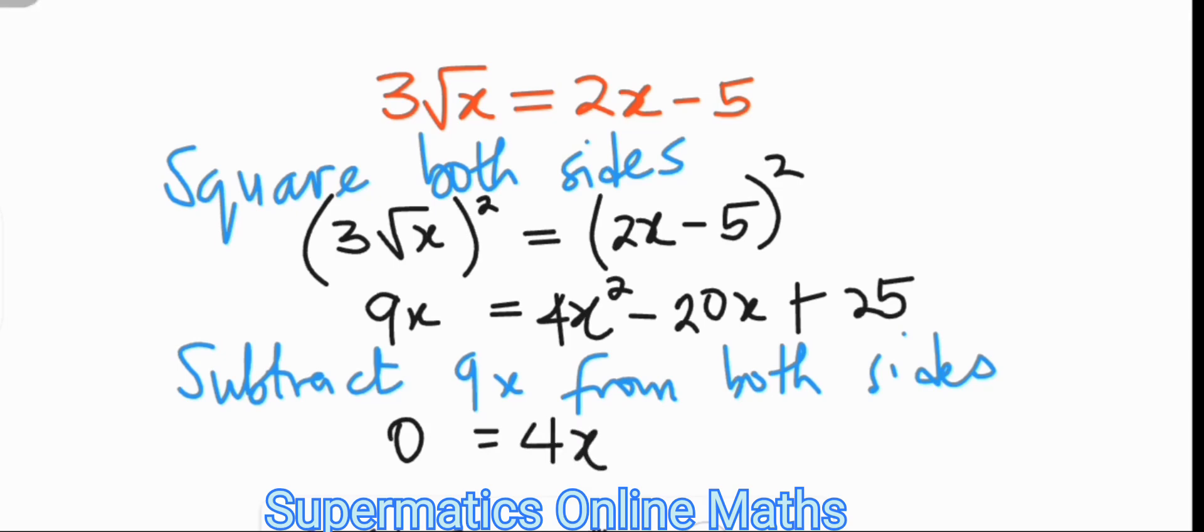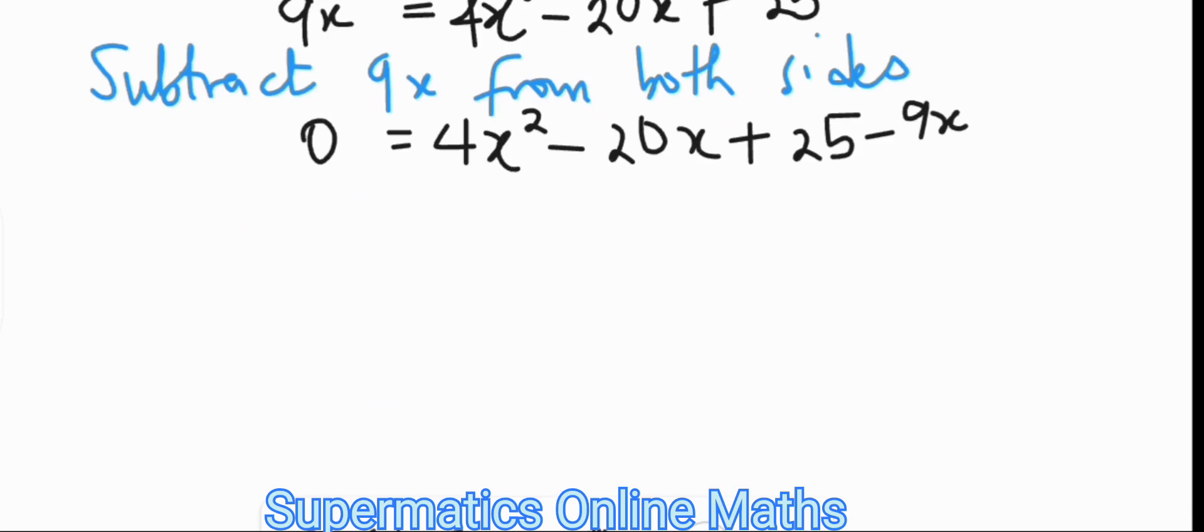it is going to be 4x squared minus 20x plus 25 minus 9x. We can then regroup to have 0 equals 4x squared minus 20x minus 9x plus 25.